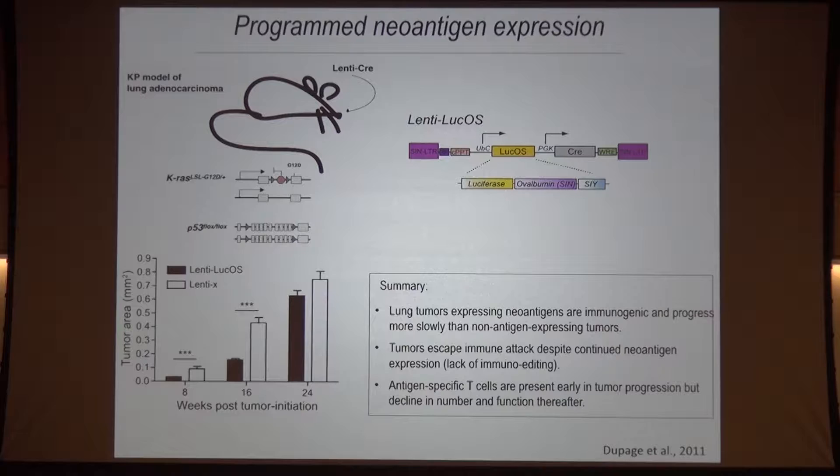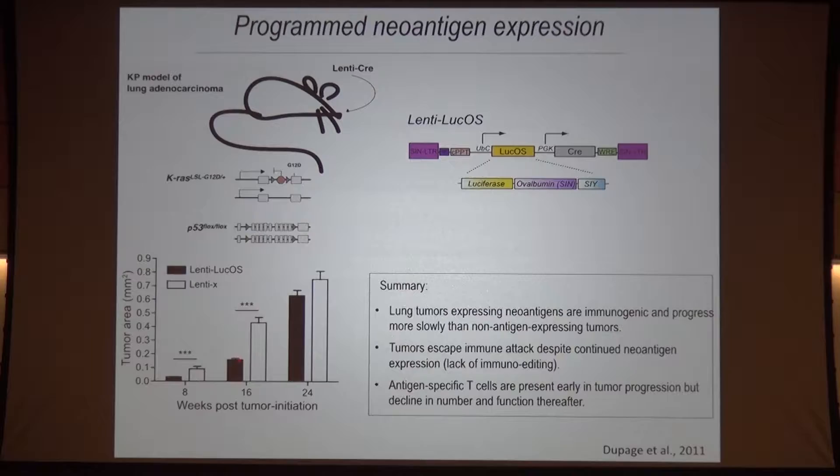That immune response is effective: the antigen-expressing tumors do less well — they don't grow as extensively in the presence of the antigen. We know this is immune-cell dependent, because if you do this experiment in a rag-null background, you don't see any difference between the two. So the immune system is having an effect here. That's the good news.